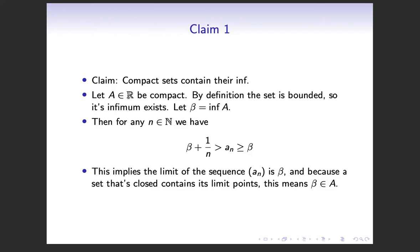And because A is compact, meaning it's closed and bounded, it must contain its limit points. So beta must be in A. So this proves that compact sets contain their infima.